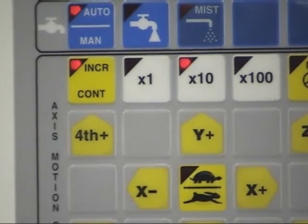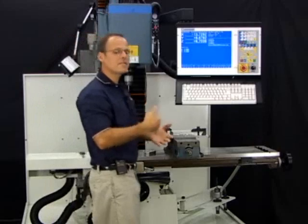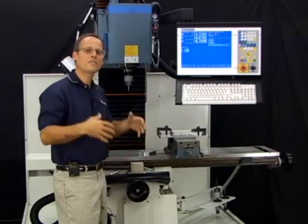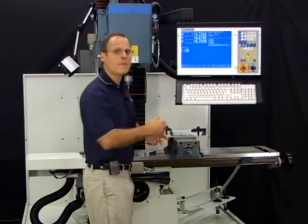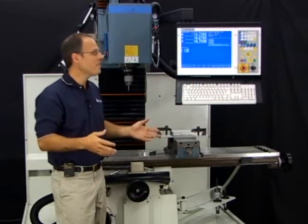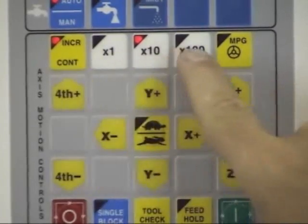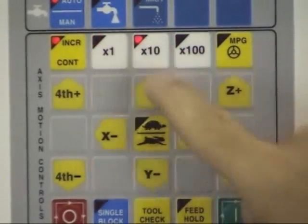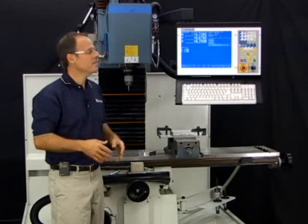These are the times one, times ten, times one hundred buttons. The reason it's times one, times ten, times one hundred is it's a user-settable feature in the control. It could be times whatever amount I choose. From the factory, the controls are set so that times one is one ten-thousandth of an inch, times ten is one thousandth of an inch, and times one hundred is ten thousandths of an inch.